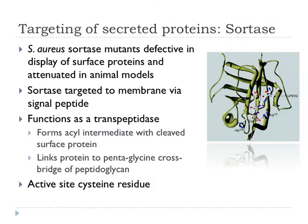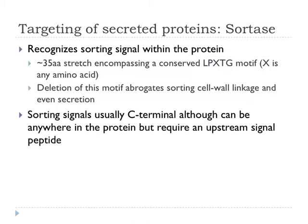Sortase looked as if it was a normal secreted protein. It's got a signal peptide that goes to the Sec system to be secreted across the cytoplasmic membrane. And then it functions as a transpeptidase. It forms a thioester intermediate with the cleaved surface protein and then links that protein — staples it, if you like — to a pentaglycine crossbridge in the peptidoglycan. When you look at the sequences and structure, there's an active site cysteine residue which is conserved in all members of this class of enzymes.